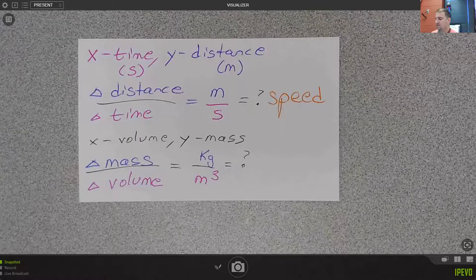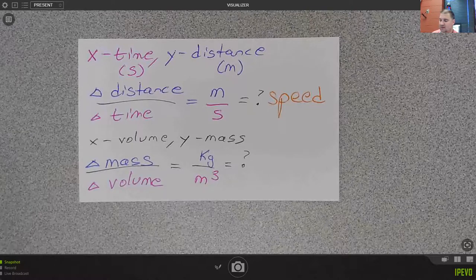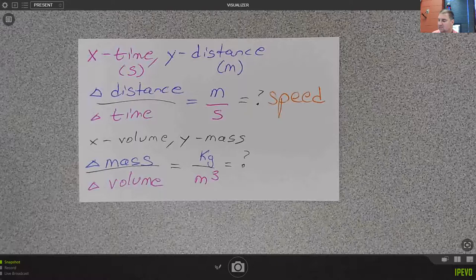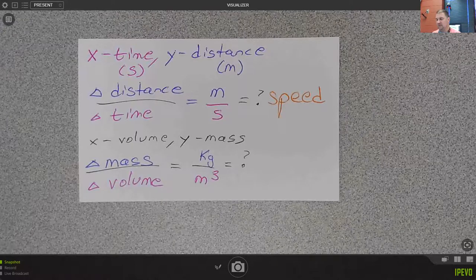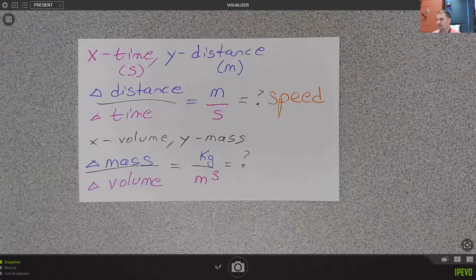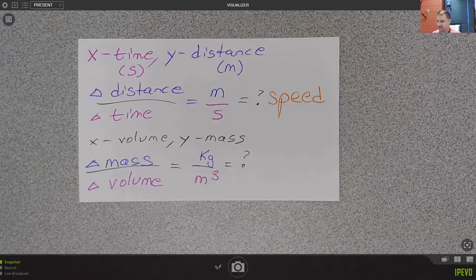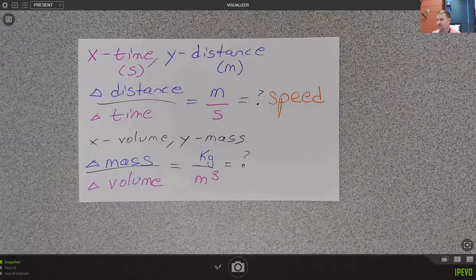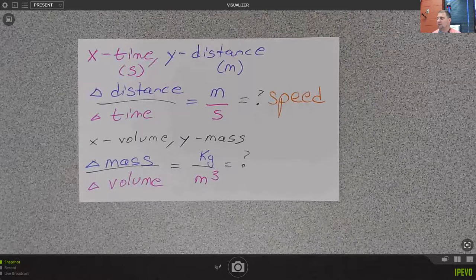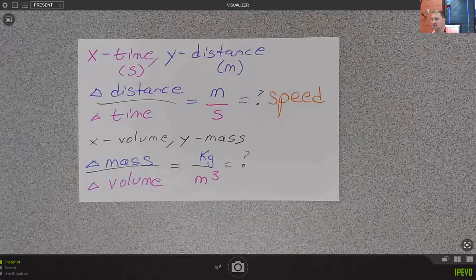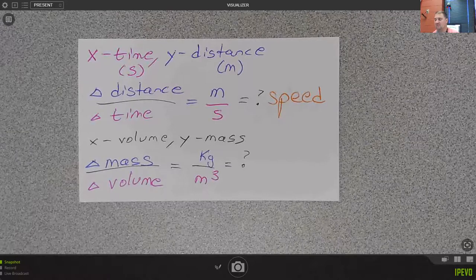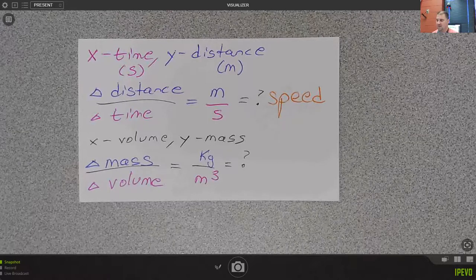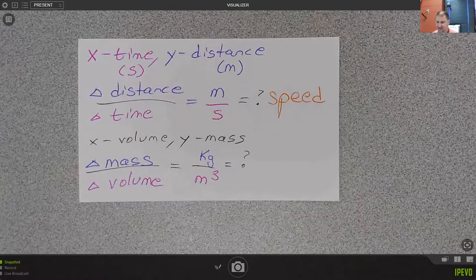Okay, multiply by, okay, six meters per second should be divided by 1,000 meters to change meters to kilometers. There we go, that's a little bit better.